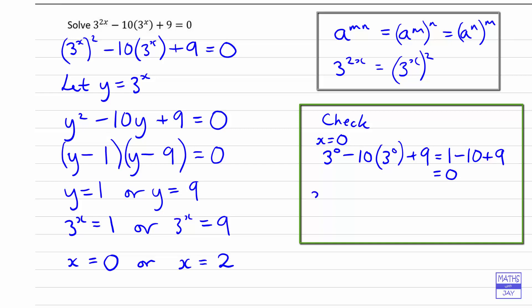And then let's check x equals 2, and that will give us 3 to the power of 2 times 2, so 3 to the 4 minus 10 times 3 squared plus 9. And that's going to be 81 minus 10 nines, so that's minus 90 plus 9. And that again is 0, so we know that our answers are correct.